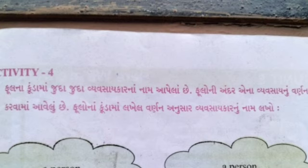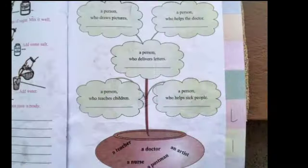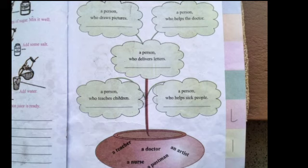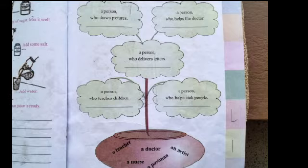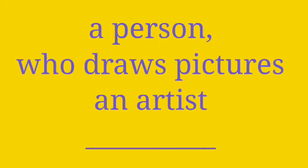So, we are going to show you the first video of activity 4. The picture given in activity 4 is shown fully. Below it, the blank is given. A person who draws pictures — what is such a person called? In one sentence, they are called an artist, meaning kalaakar (કલાકાર).